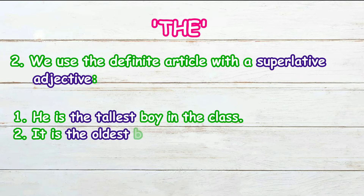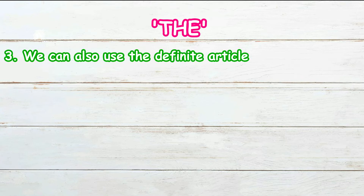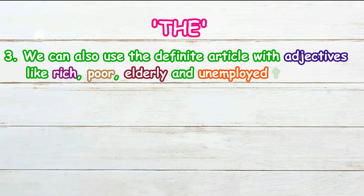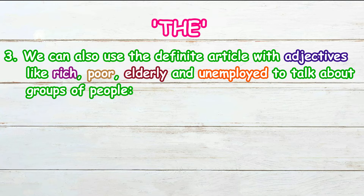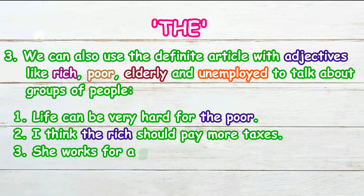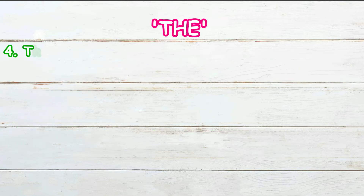We use the definite article with a superlative adjective. For example: 'He is the tallest boy in the class,' or 'It is the oldest building in the town,' or 'Burj Khalifa is the highest building in the world.' We can also use the definite article with adjectives like rich, poor, elderly, and unemployed to talk about groups of people. For example: 'Life can be very hard for the poor,' or 'I think the rich should pay more taxes,' or 'She works for a group to help the disabled.'